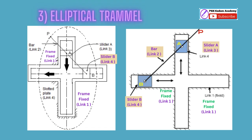The third inversion of the double slider crank chain is the elliptical trammel. Links: 1. Frame (fixed). 2. Link PB connecting slider A and slider B with an extended portion. 3. Slider A. 4. Slider B. Kinematic pairs: slider A and frame form one sliding pair; slider B and frame form another sliding pair; slider A and link PB form one turning pair; slider B and link PB form another turning pair.